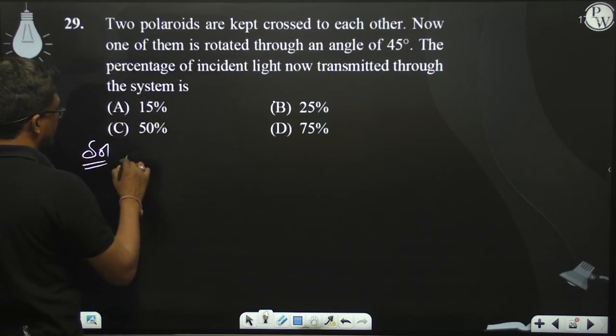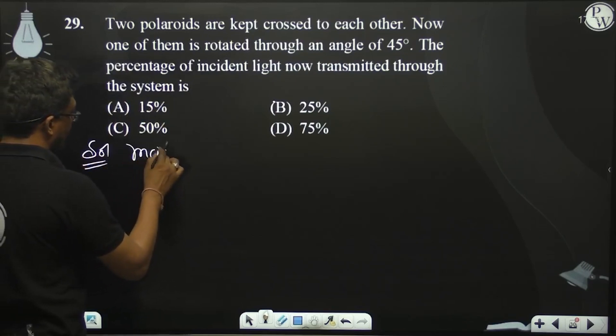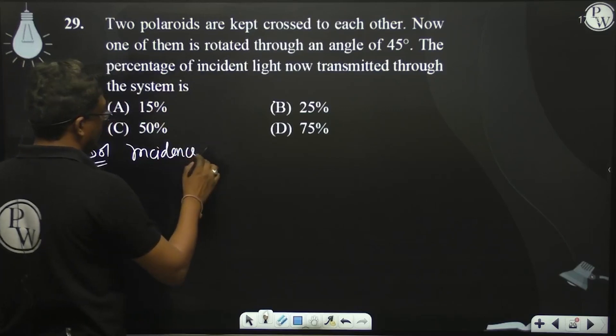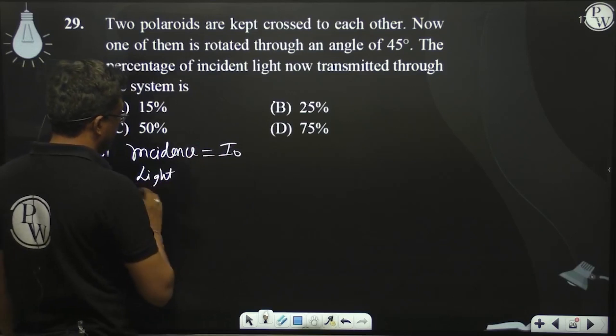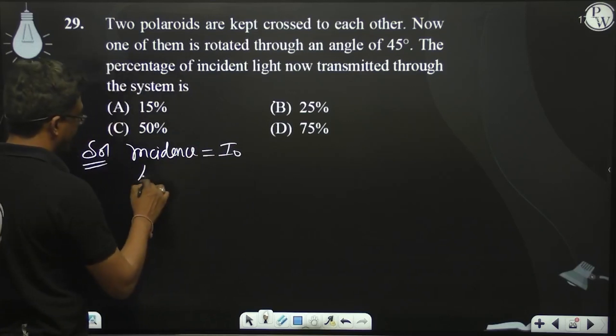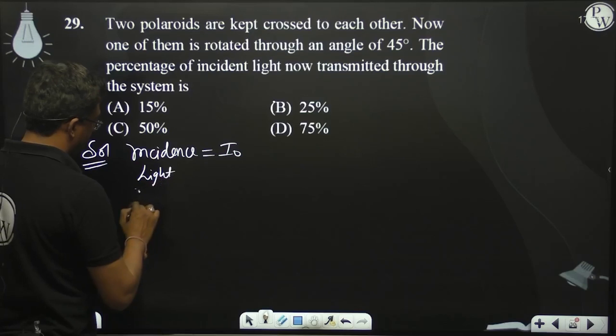So if I say incident light intensity, how much do we have? I naught is the intensity - the incident light intensity.